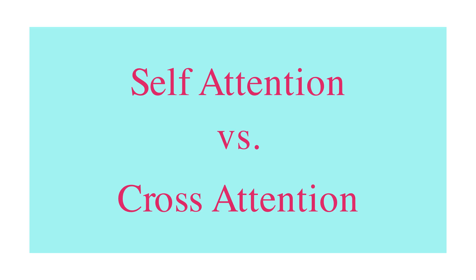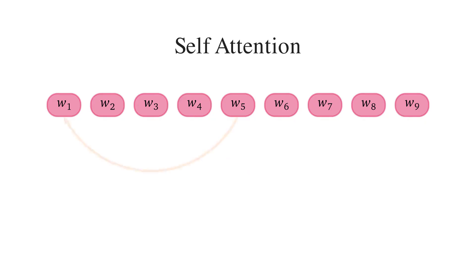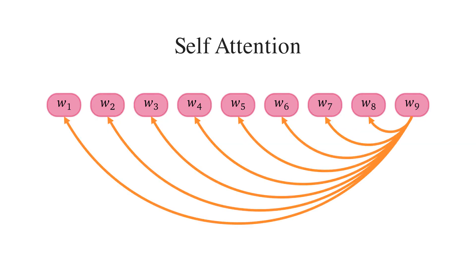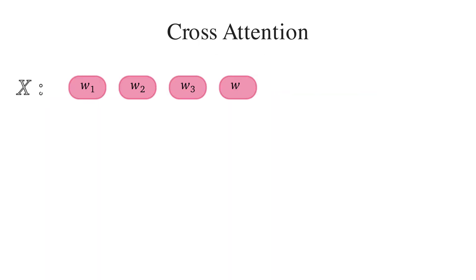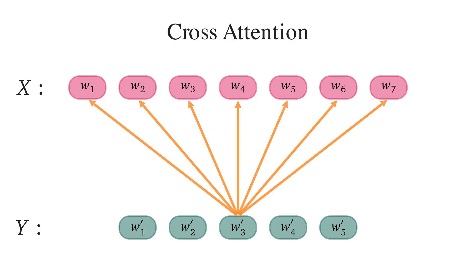This brings us to the last topic: self-attention versus cross-attention. Self-attention is when we want to find the relationship among words in a single input sequence — each word can attend to other words with different degrees. For cross-attention, we have two sequences X and Y, for example X as English sentences and Y as their German translations, where the lengths of X and Y can differ. We use cross-attention to make each word in sequence Y attend to words in sequence X.